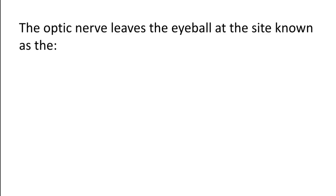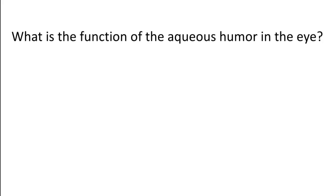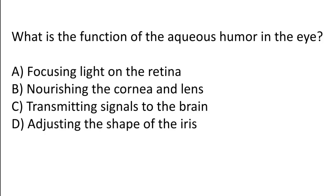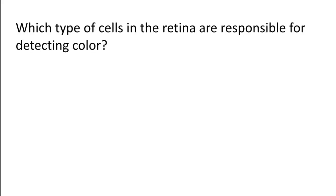The optic nerve leaves the eyeball at the site known as the optic disc. What is the function of the aqueous humor in the eye? Focusing light on the retina, nourishing the cornea and lens, transmitting signals to the brain, or adjusting the shape of the pupil. The correct answer is option B — the function of the aqueous humor is nourishing the cornea and lens.